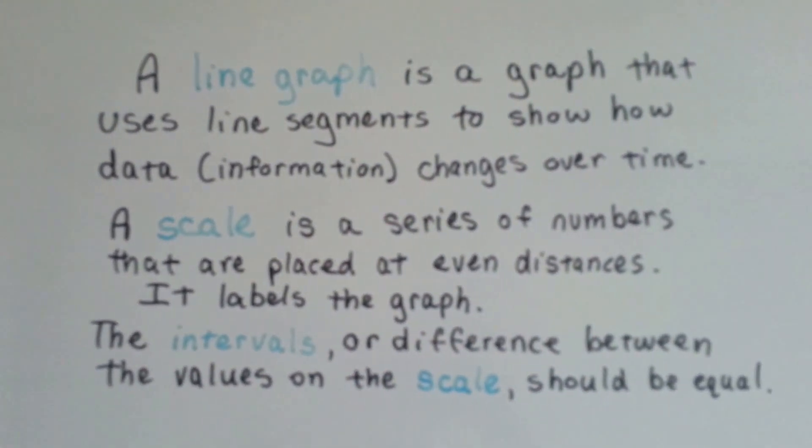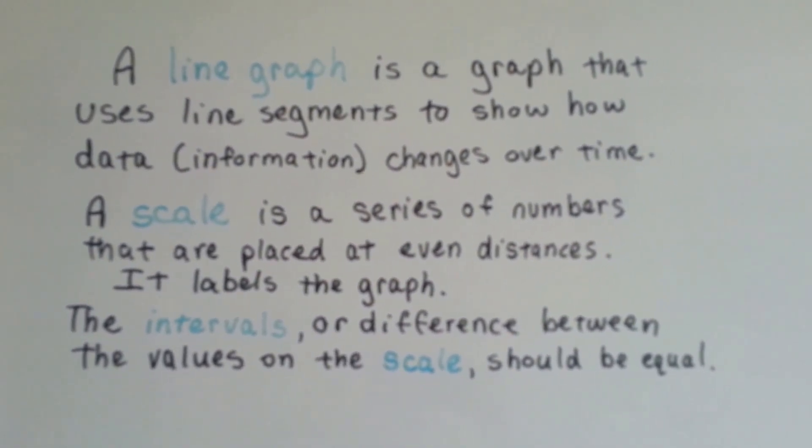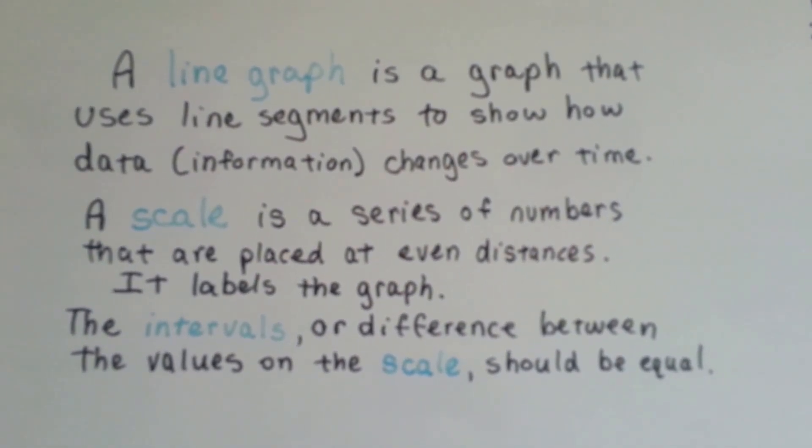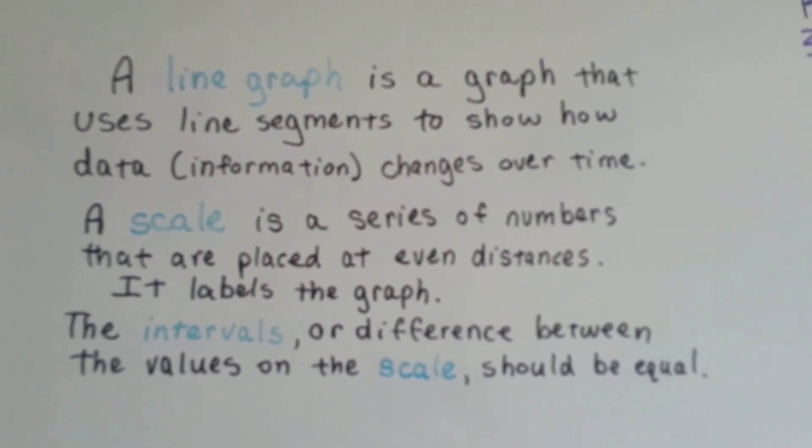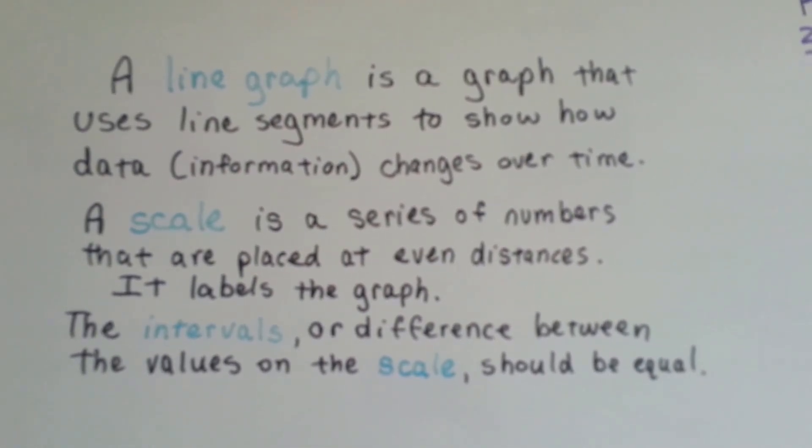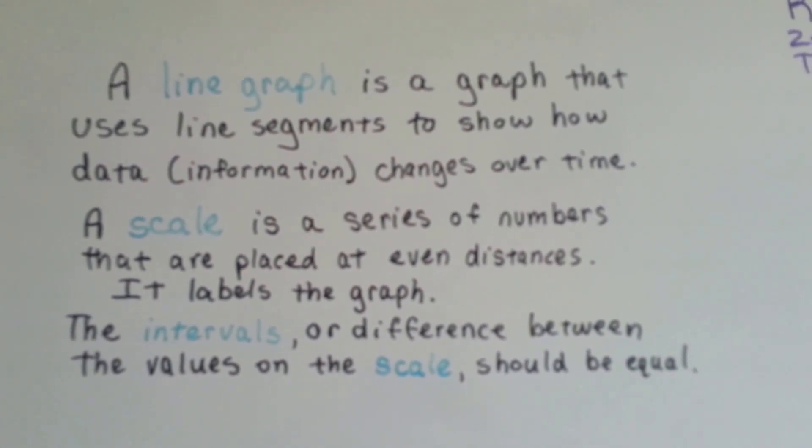A line graph is a graph that uses line segments to show how data or information changes over time. A scale is a series of numbers that are placed at even distances. It labels the graph. The intervals or differences between the values on the scale should be equal.